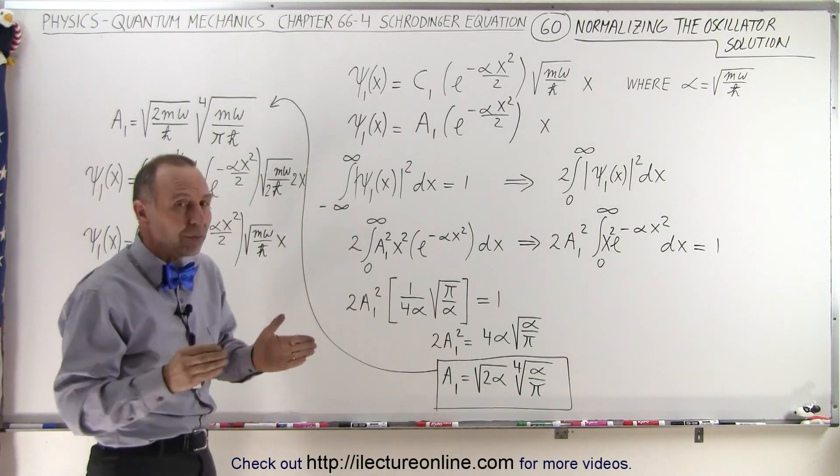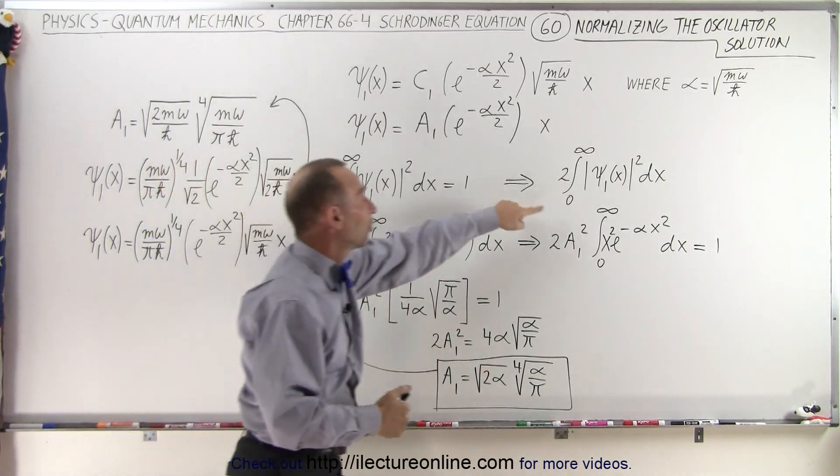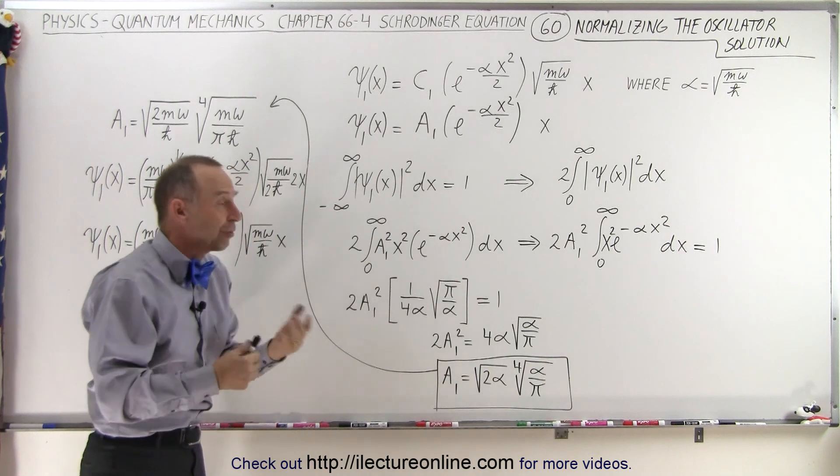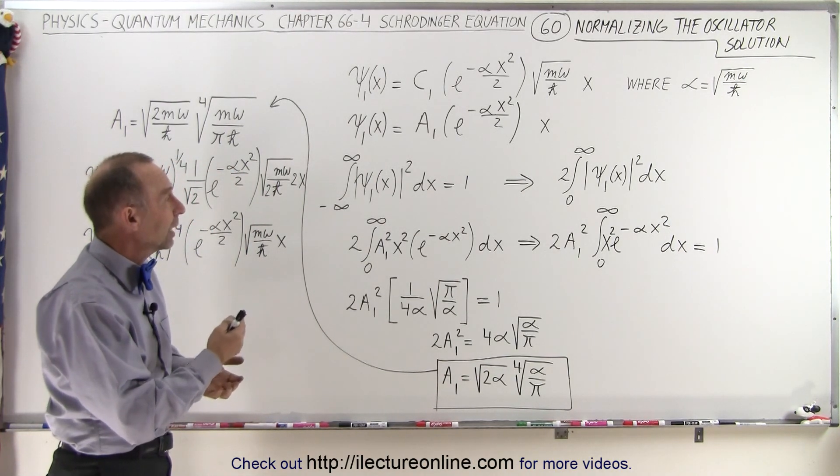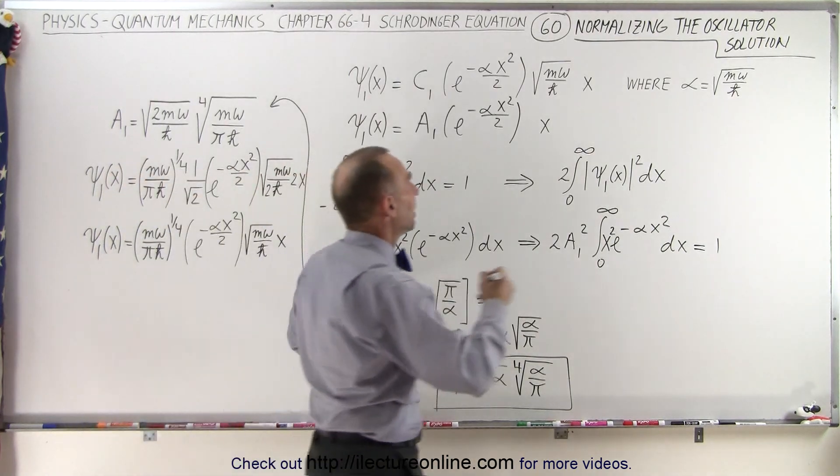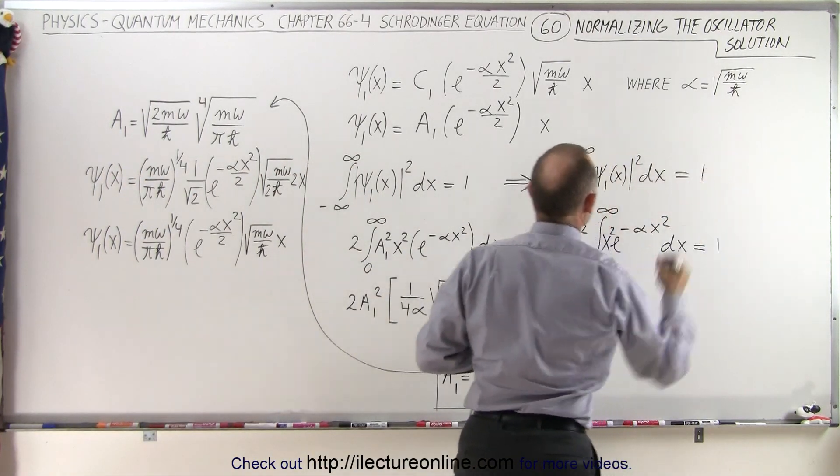Well, because of the symmetry, we can actually integrate it from 0 to infinity and multiply it times 2. So we have our function squared times dx times 2, integrated from 0 to infinity, and of course, we set that equal to 1.